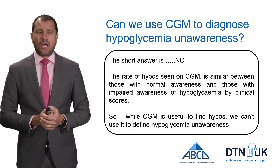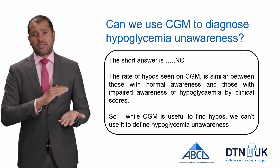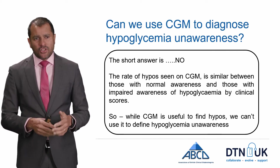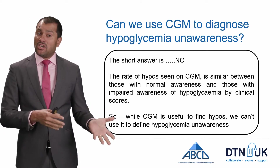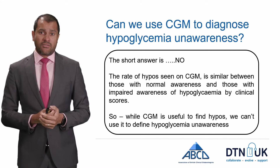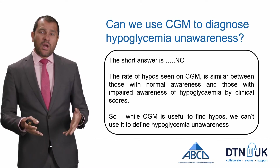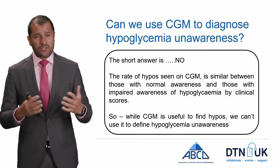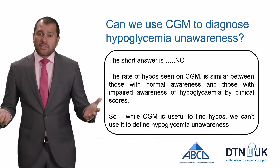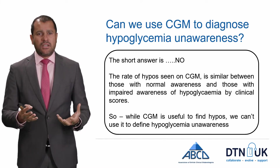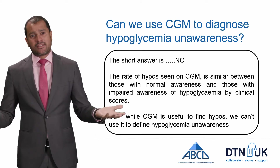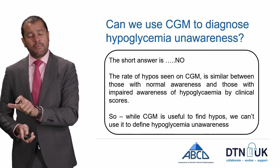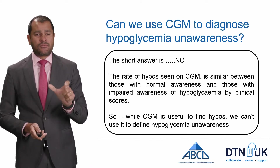Can we use CGM to diagnose hypoglycemia unawareness? The short answer is no — because even in people we think have good warning signs of hypoglycemia, they are unaware of up to half to two-thirds of their CGM hypos. In some studies the rate of hypoglycemia seen in hypo-aware and unaware patients is the same, so we can't really use CGM to differentiate. CGM is useful to find out where the hypos are happening, but not that useful to define hypoglycemia unawareness.